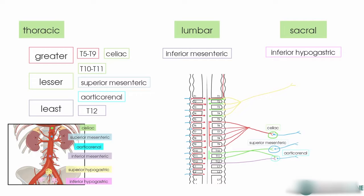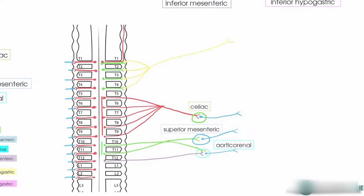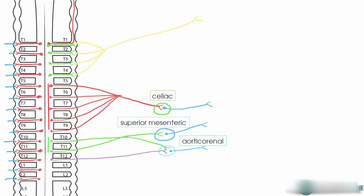Once the preganglionic fibre has reached its pre-vertebral ganglion, the postganglionic fibre then travels along corresponding blood vessels to innervate the target organs.